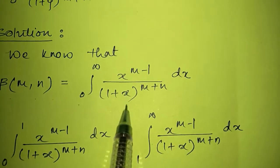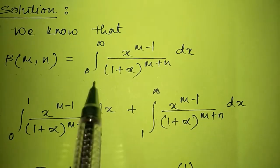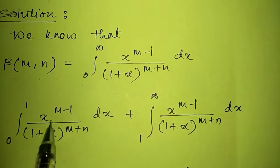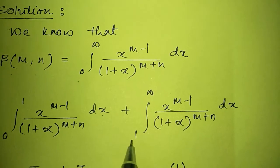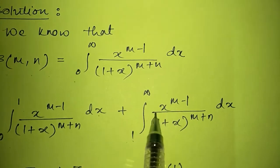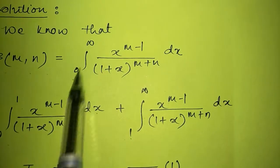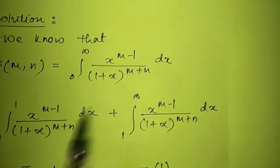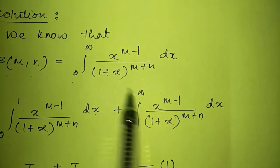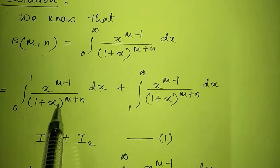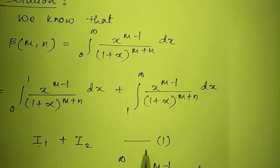We are going to make use of this definition of beta function. Accordingly we will split this integral into two parts: integral from 0 to 1 of x raised to m minus 1 upon 1 plus x bracket raised to m plus n dx, plus integral from 1 to infinity of x raised to m minus 1 upon 1 plus x raised to m plus n dx. We split the limits 0 to infinity into two parts: 0 to 1 and 1 to infinity. We call these I1 and I2, so beta(m,n) equals I1 plus I2 — equation number 1.